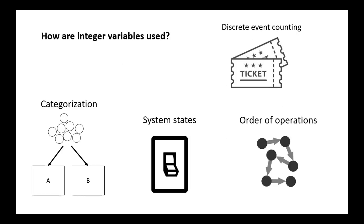First, let's talk about how integer variables are useful. There are a number of possible applications for integer variables. Your imagination is the limit in how you use these. But some common applications include categorization of objects into certain groups, assigning system states based on operating conditions, counting discrete events like ticket sales at a concert, or enforcing the order of operations where you have to enforce an order before a non-integer variable can take on a value. These are just different examples. Of course, there are many more that you can come up with.